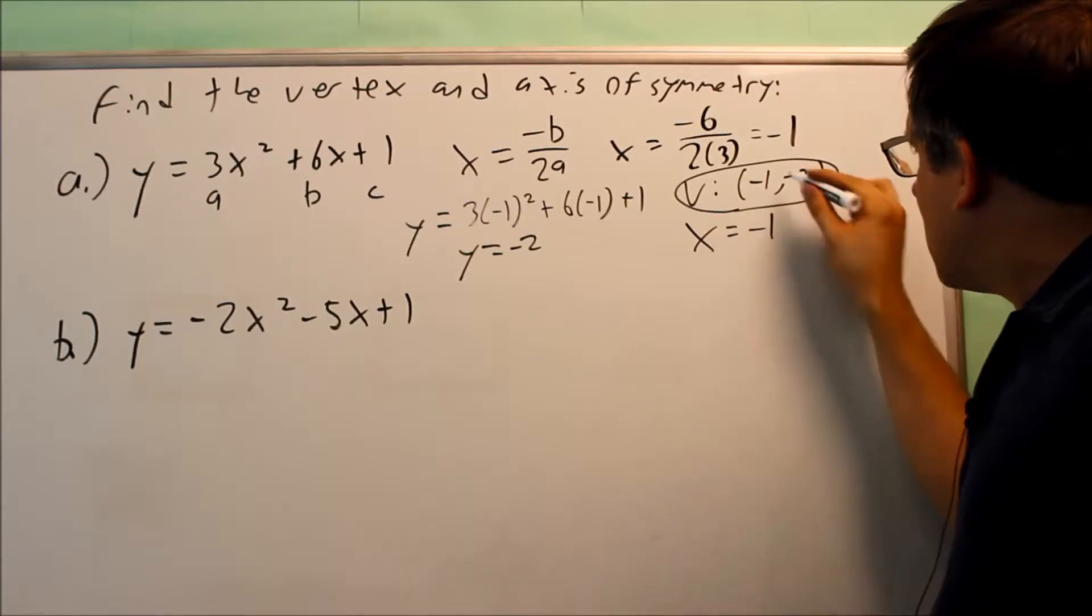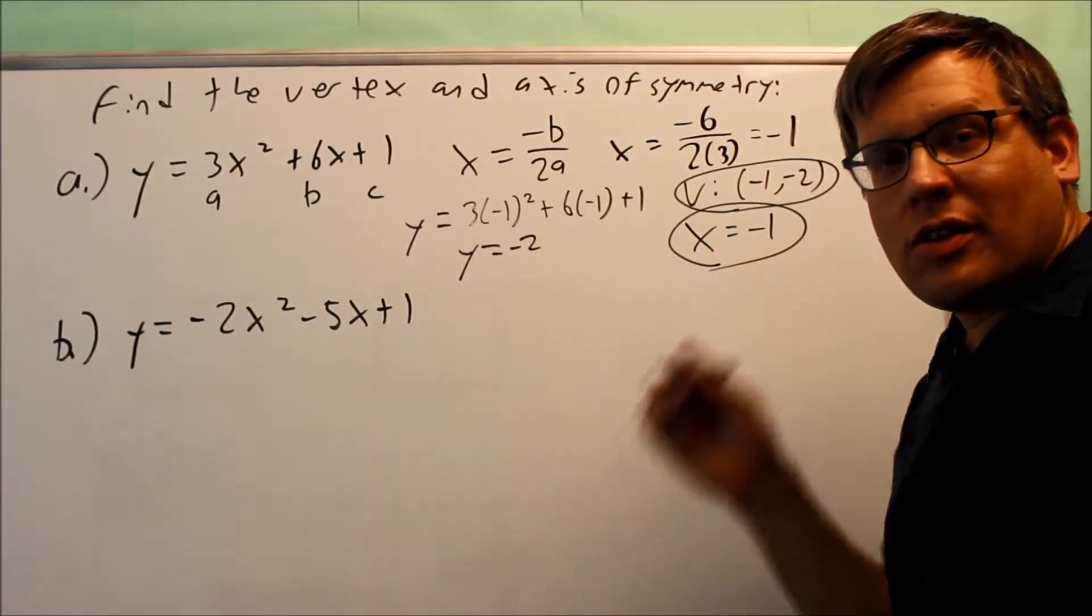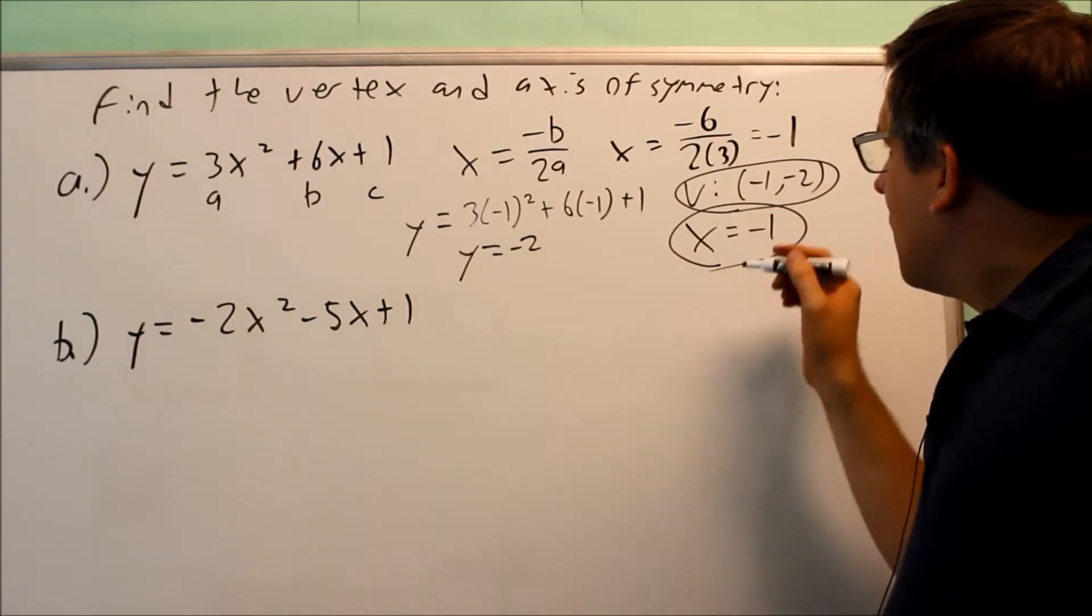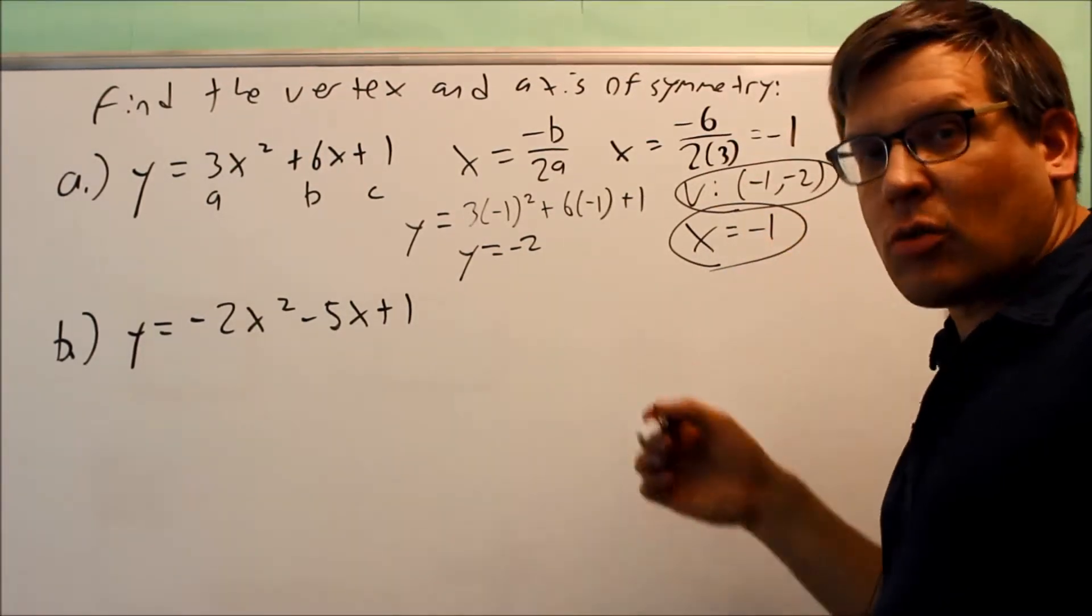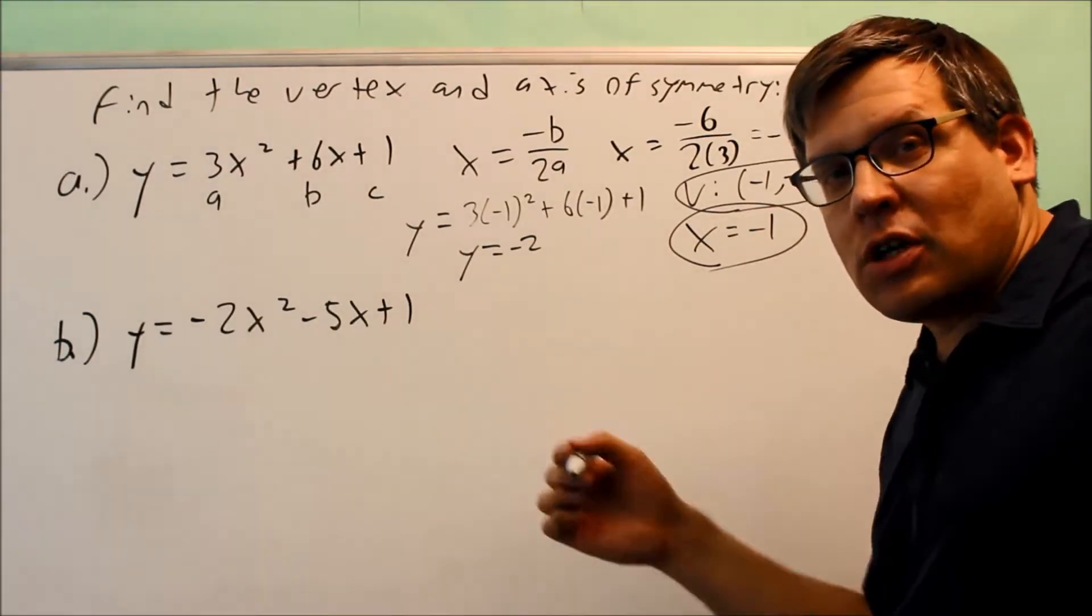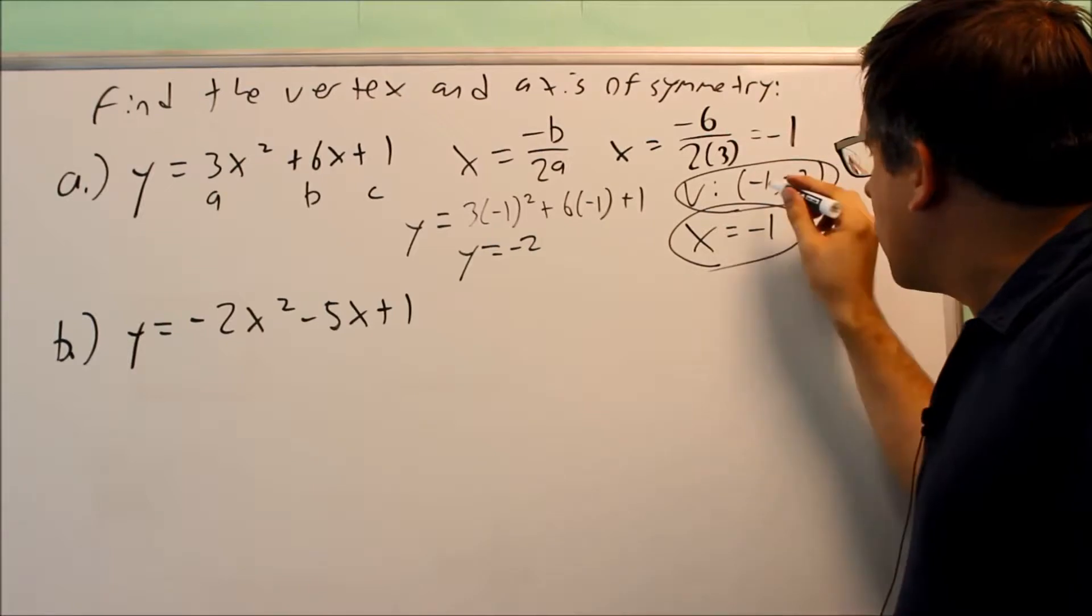So here's the first part of the answer. It's negative 1, negative 2 is your vertex. x equals negative 1, that would be the equation of a line where it has a fold line there. So you have to make sure you put x equals in there in order for it to be correct. It's got to be an equation of a line. It always goes through the x-coordinate of your vertex right there.